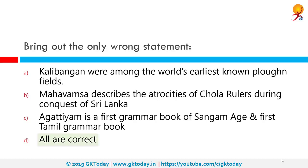Bring out the only wrong statement. All of them are correct. Kalibangan in Rajasthan has given evidence of the earliest ploughed agricultural field revealed through excavation. Raja Raja Chola conquered the northern half of Sri Lanka, and Rajendra invaded Sri Lanka in 1017 CE and annexed the entire island. Agathiam was the earliest book on Tamil grammar, compiled by the first Sangam by Agastya.